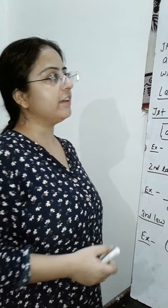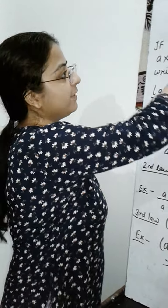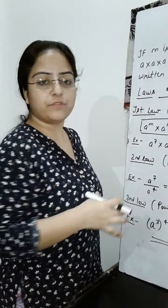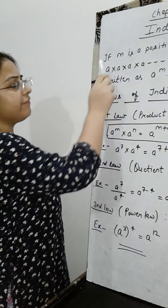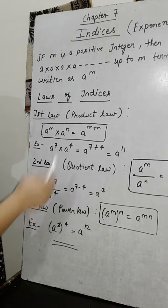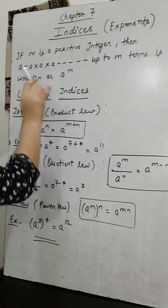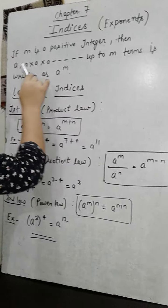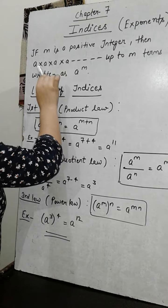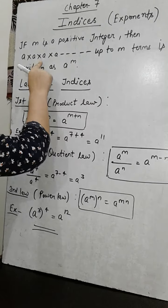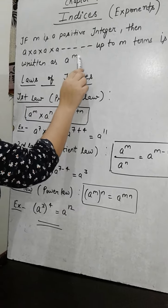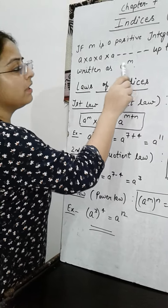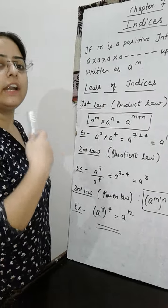Dear students, our next chapter is chapter 7, Indices. First of all, we will study about some of its laws. If m is a positive integer and a is any number, and a is multiplied up to m terms, then this multiplication can be written as a raised to the power m. Here a is the base and m is the power, also called the exponent or index.